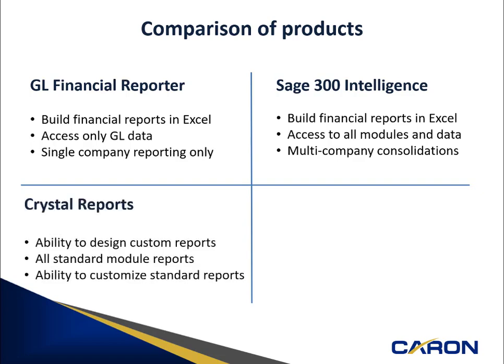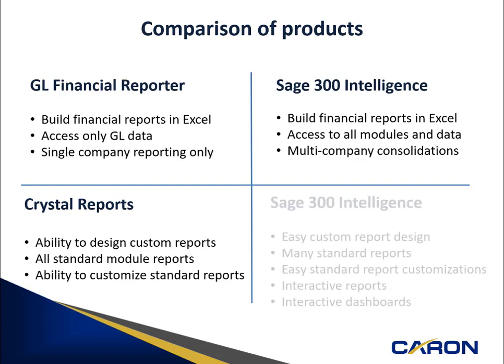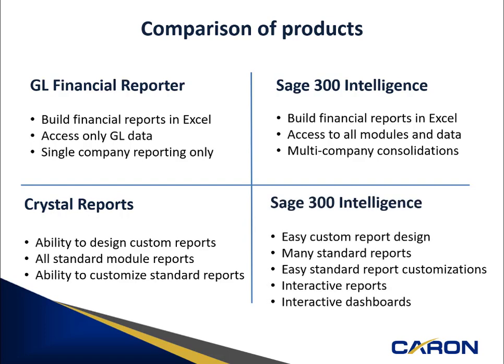Crystal Reports is a common tool which gives you the ability to design custom reports, allows access to all standard module reports, and the ability to customize standard reports. Now, Crystal Reports is a powerful tool, but users tend to find that Crystal is a little bit harder to learn. Sage 300 Intelligence allows easy custom report design. It has many standard reports that come with it, and it allows you to modify those standard reports quite easily. It also has interactive reports, so unlike Crystal, you can run a report in SAGE Intelligence and modify it on the fly instead of having to close the report, change the parameters, and rerun that same report.